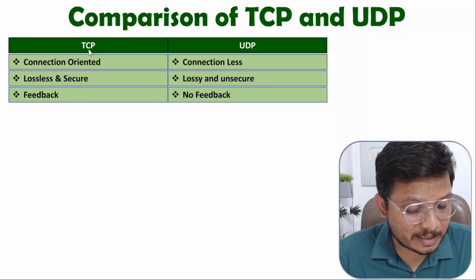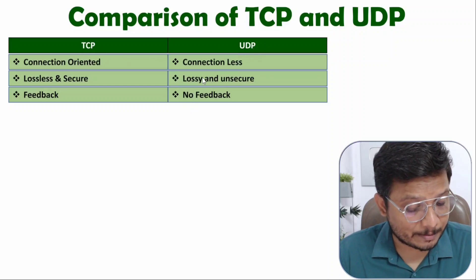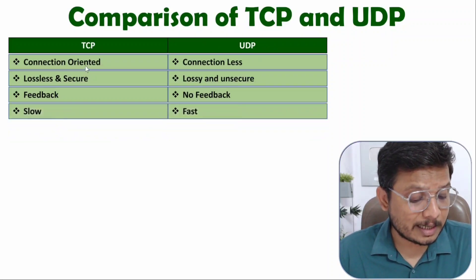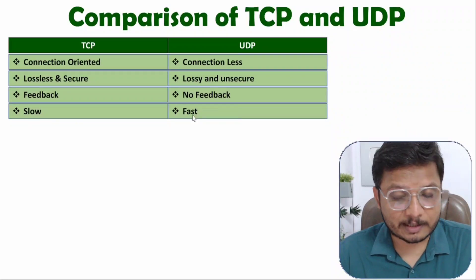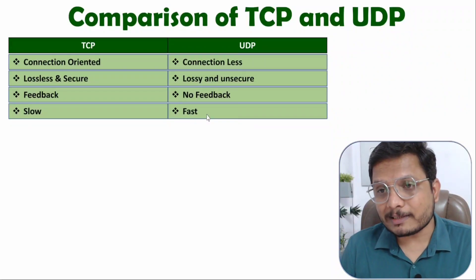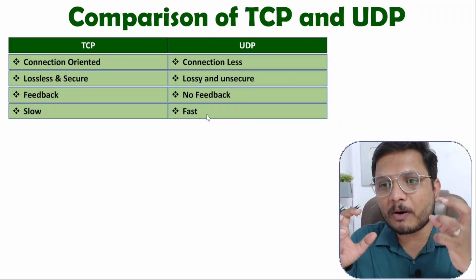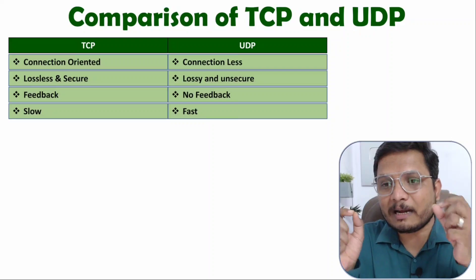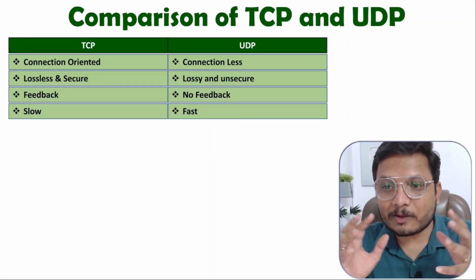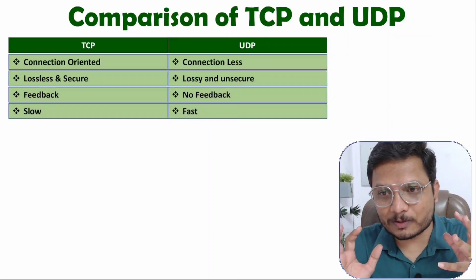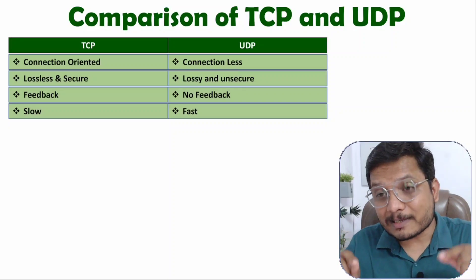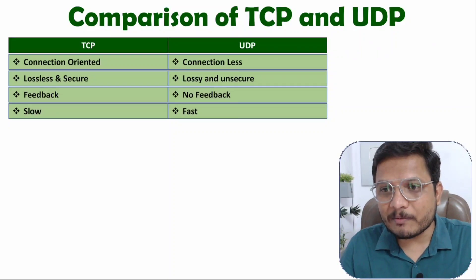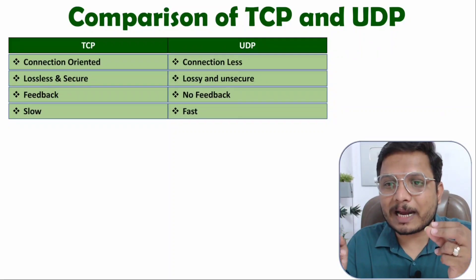TCP is a feedback-based system, while UDP has no feedback. TCP connection is slow and UDP connection is fast. The reason TCP is slow is that it performs feedback, acknowledgement, and all those processes — which makes it secure but slow. UDP skips all that, which makes it fast.